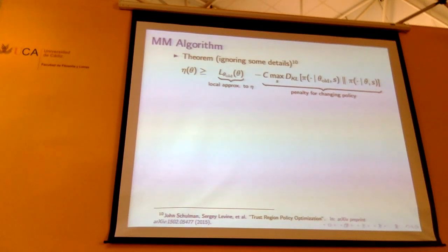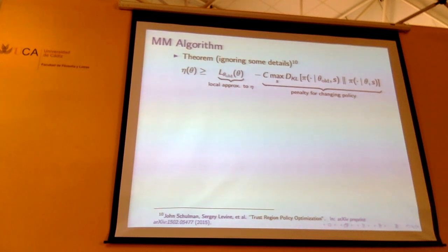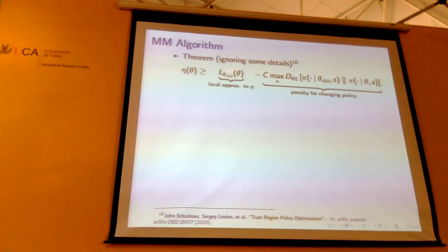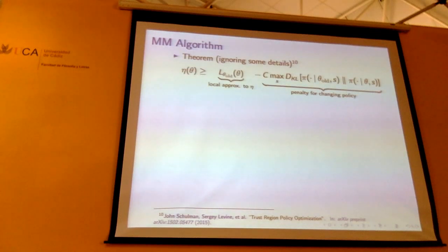The crux of the problem is that the advantage function ignores changes to the state distribution of the policy — that's how we derived the local approximation. The formula starts to get bad when the state distribution changes a lot. If we're pessimistic and assume that when you go outside of the original state distribution something really bad happens, you end up with a formula that has a penalty for changing your policy, given by the KL divergence between the old and new policy.